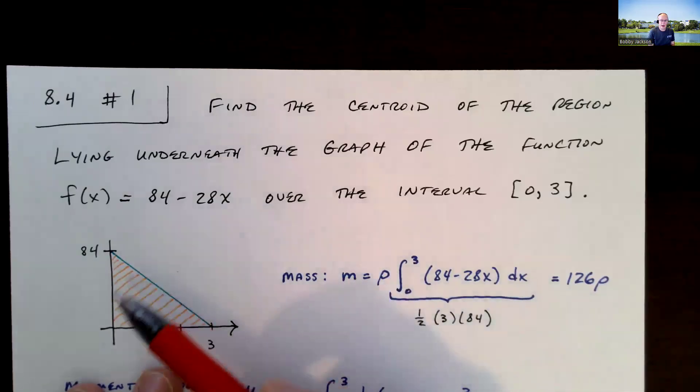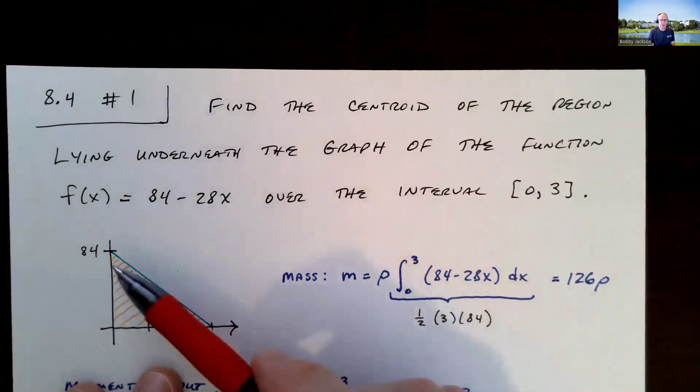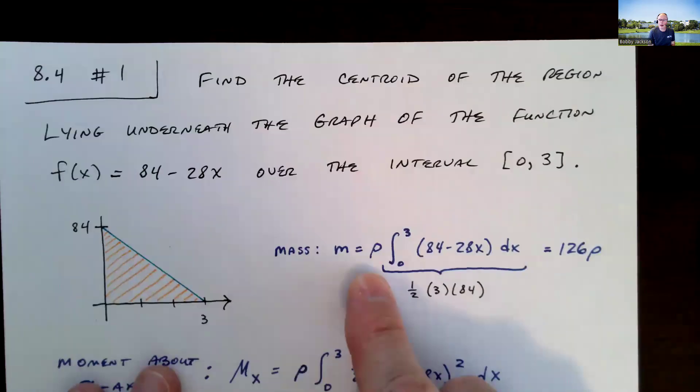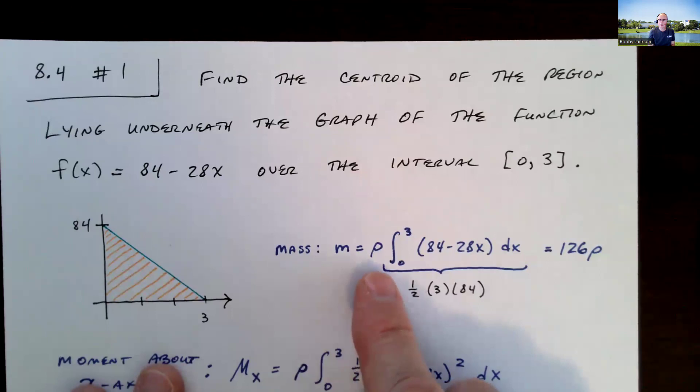We're going to compute the mass of this planar lamina. Think of this triangular region as being a thin plate, if you will, of some uniformly dense material with density rho. Rho will be our density. It could be in kilograms per cubic meter or something like that. We're just going to multiply it by the area. Just think about the thickness of this plate or lamina as being one square unit.